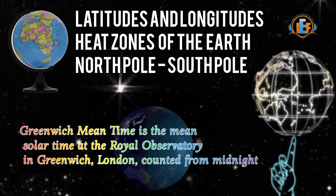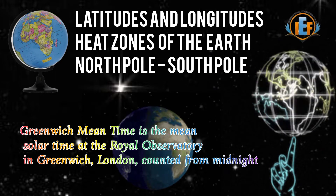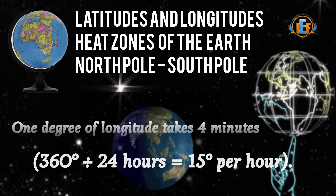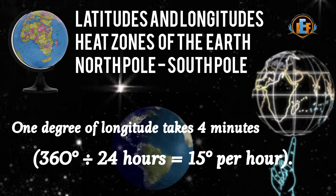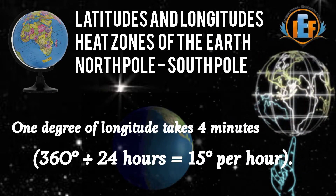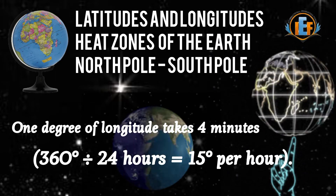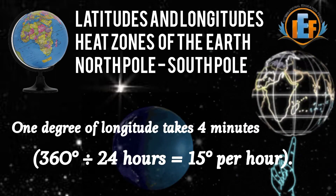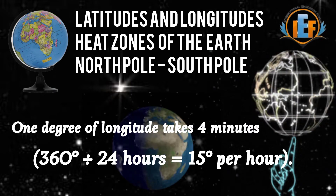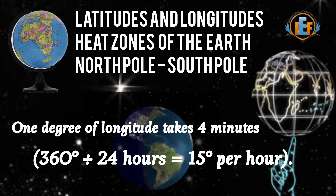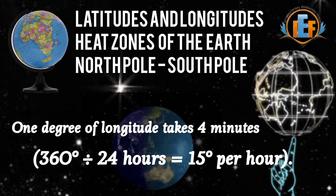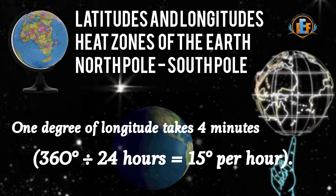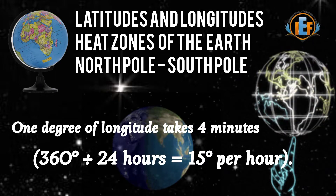Each longitude represents four minutes of time. With 360 degrees total, we have 360 lines, each representing 4 minutes. So 360 multiplied by 4 minutes equals 1,440 minutes, which equals 24 hours.